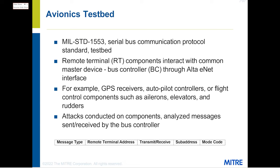To validate our approach, we use experimental test beds where we know the ground truth. One test bed is an avionics system adhering to military standard 1553 — a basic network with devices connected to a centralized controller. The remote terminals include GPS receivers, autopilot controllers, and flight controllers for ailerons, elevators, and rudders. With this apparatus, we conduct attacks on various components and analyze the messages and data sent to the centralized controller, including message type, remote terminal address, transmit or receive status, sub-address, and mode code.